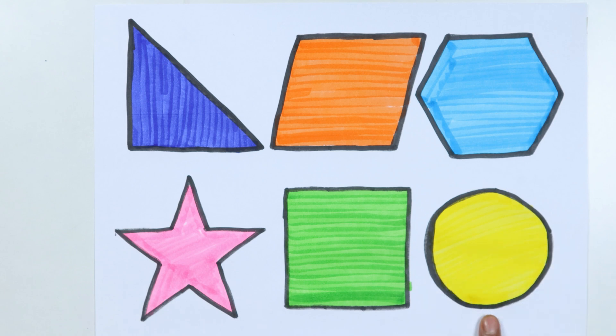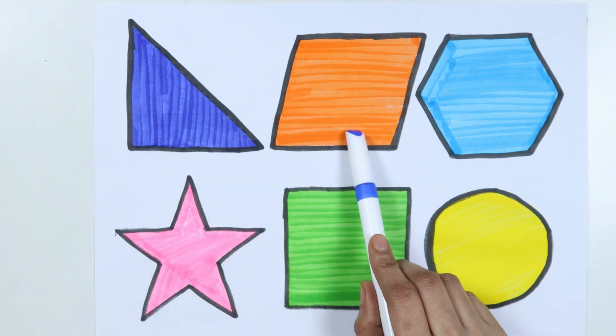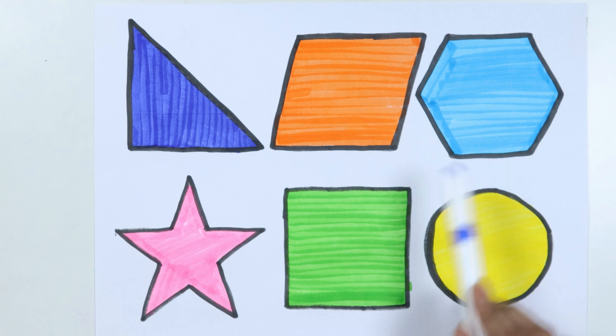Circle. Right triangle, parallelogram, hexagon, star, square, circle.